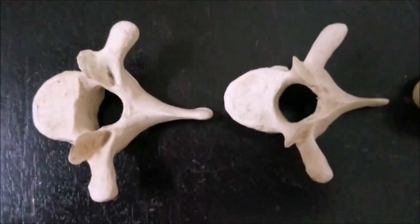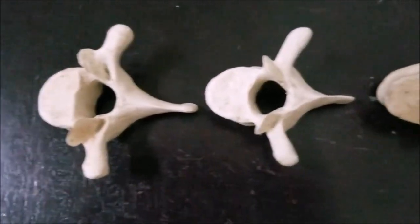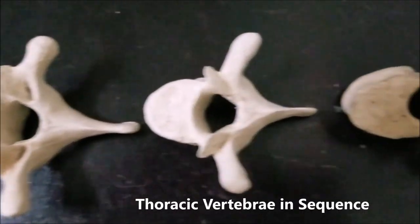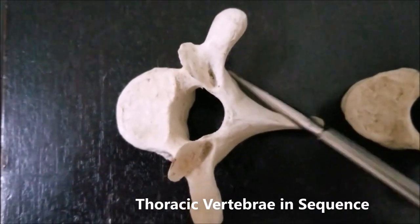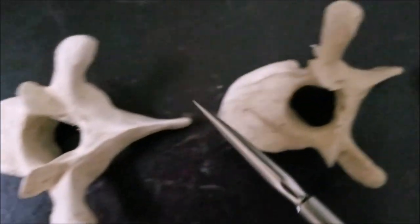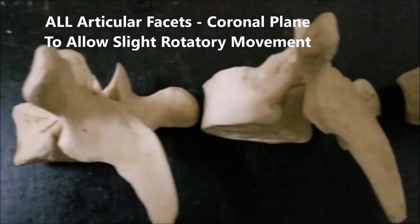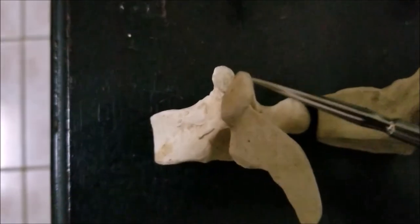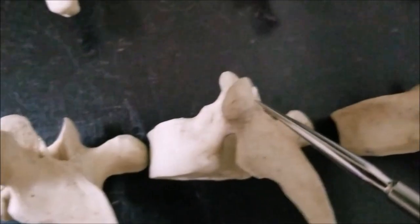To understand this concept of articular facets, we have now shown the same thing from a different perspective, with a few individual thoracic vertebrae kept in sequence. Looking at the first few thoracic vertebrae, you notice that the articular facets are pointing in a coronal plane because they allow slight rotatory movement. Here in the sideways view of the middle thoracic vertebrae, we can see the superior articular facet and the inferior articular facet are all located in a coronal plane.